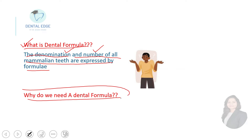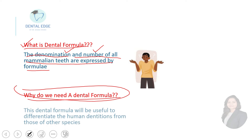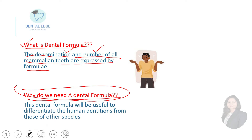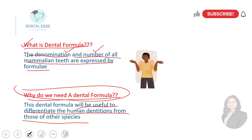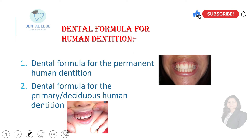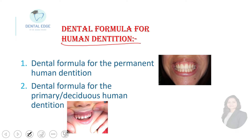Why do we need a dental formula? This dental formula will be helpful to differentiate human dentition from those of other species. All species will have different dental formulas, helping us identify which species we are talking about. We will be more concerned with the dental formula for human dentition.